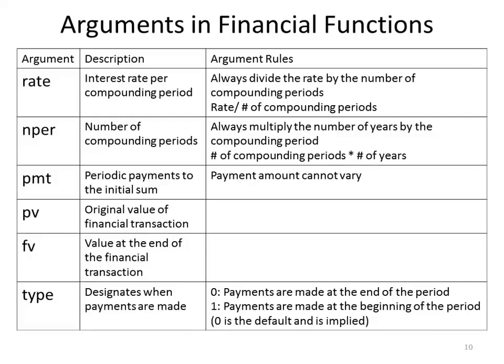Let's talk about arguments in financial functions. The rate argument is the interest rate per compounding period — you will always take the interest rate and divide it by the number of compounding periods. The NPER argument is the number of compounding periods — you will always multiply the number of years by the number of compounding periods. The PMT argument, or payment argument, is the periodic payment to the initial sum. The payment cannot vary in these functions, so a $50 payment must be assumed throughout the entire life of the loan or investment.